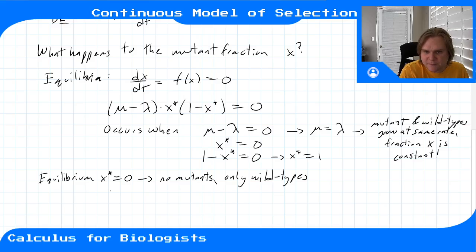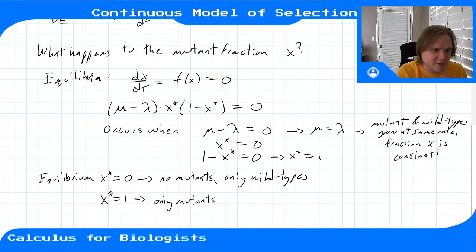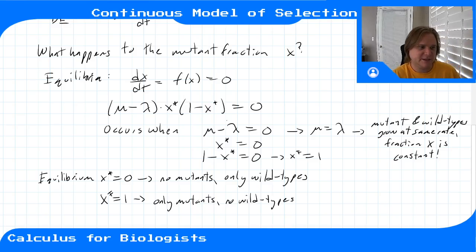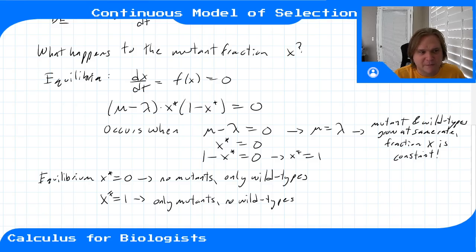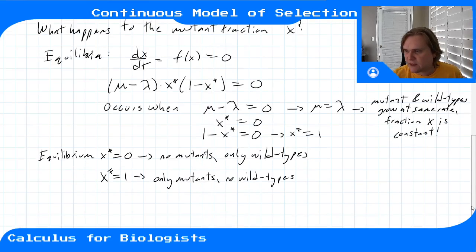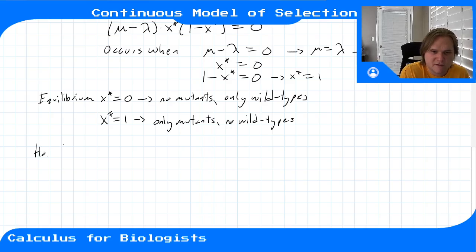The third case, 1 − x* = 0, gives x* = 1, meaning only mutants. The mutants have grown so much faster than the wild types that they've completely overtaken them — they take up the entire population with no wild types left. So the equilibrium outcomes are: equal growth rates (every fraction is an equilibrium), x* = 0 (only wild types), and x* = 1 (only mutants).